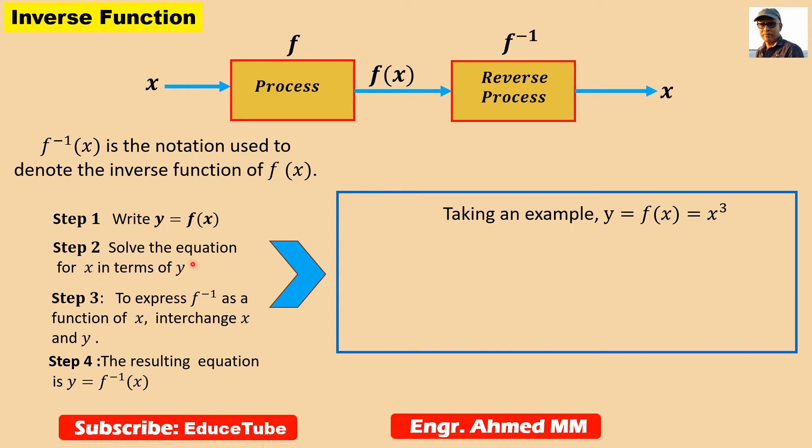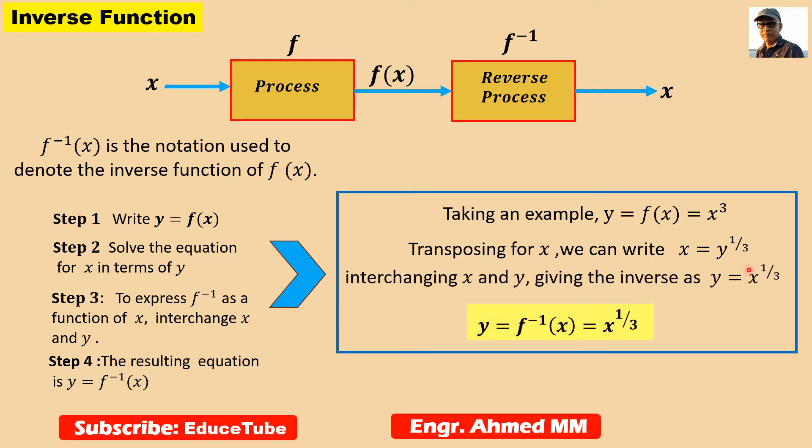So what we will do? Solve the equation for x in terms of y. So transposing for x, we can find this very easily: x equal to y to the power one third. Then step 3 says to express f inverse as a function of x, interchange x and y. Let's do that. So interchanging x and y, we get our equation as this. Because here x will be y, and here y will be x. That's the point here, to interchange x and y.